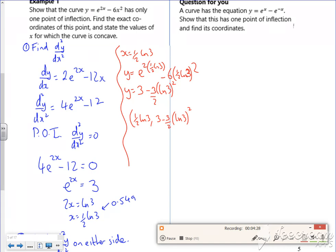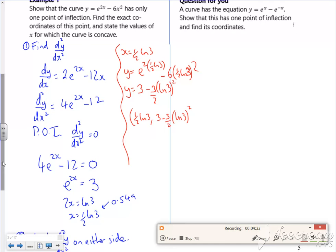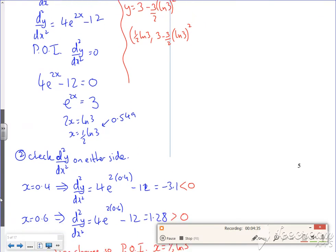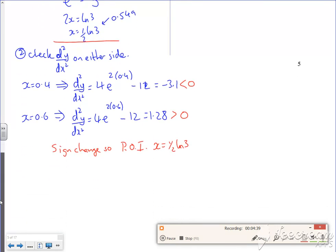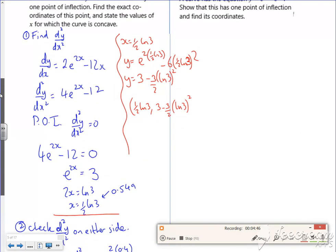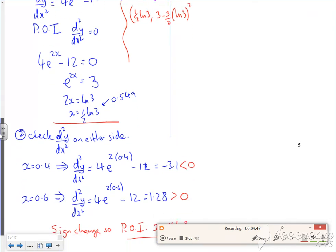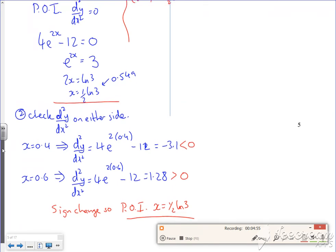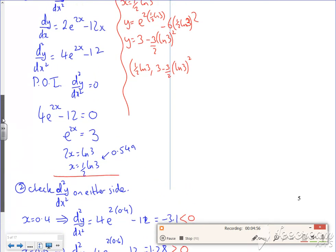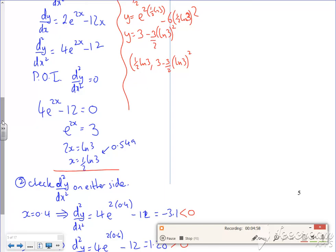Right, so it says state the values for being concave. So just double checking what we're doing. We've found the second differential. We've found where we think the point of inflection is. We've looked on either side of it. There's a sign change. So we know it's definitely a point of inflection. The concave bit is where it's less than zero. So that's going to be less than about around the 0.4 side. So it's going to be less than the half ln 3. So concave, less than half.